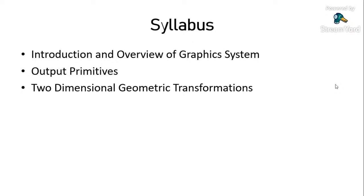The third chapter is two-dimensional geometric transformations. After learning basic primitives, we move towards transformations. When designing any graphic system, you first draw the object, then provide movement to it. The change in shape, size, or position of the object is discussed in 2D geometric transformations. There are five transformations: rotation, translation, scaling, reflection, and shear.